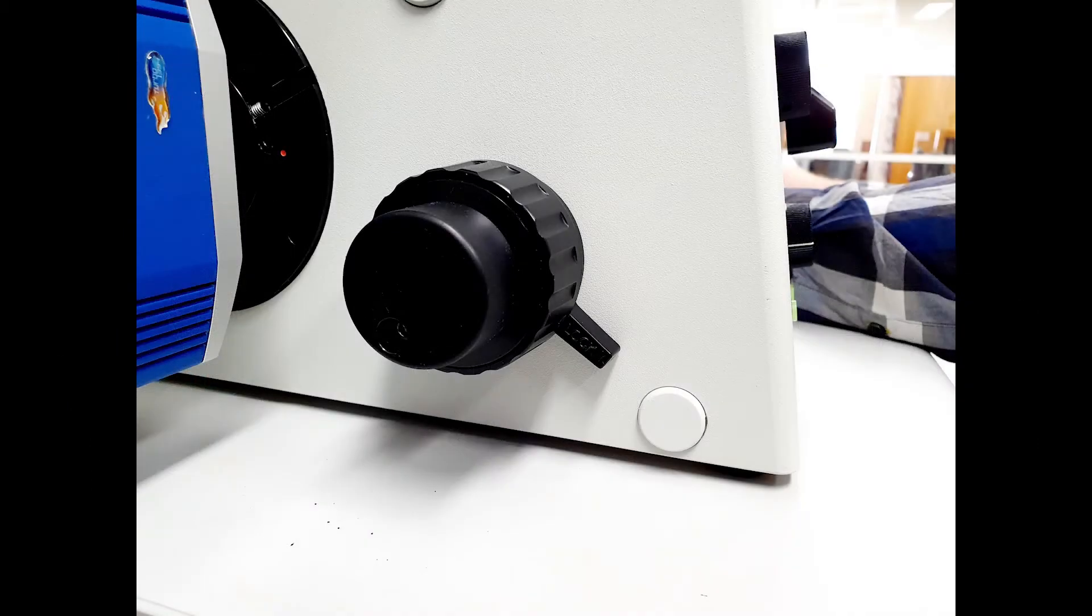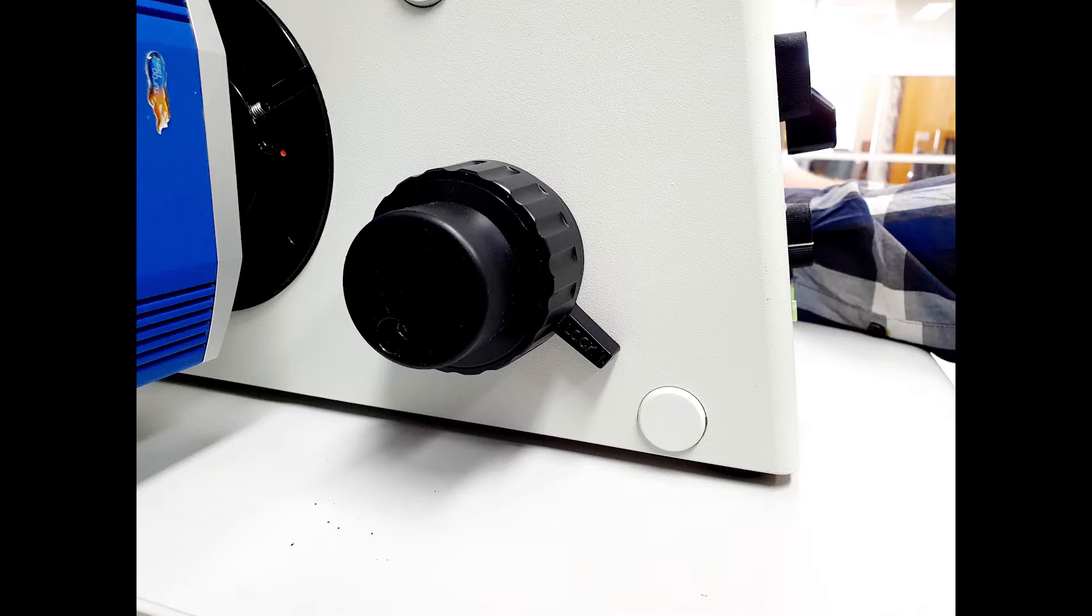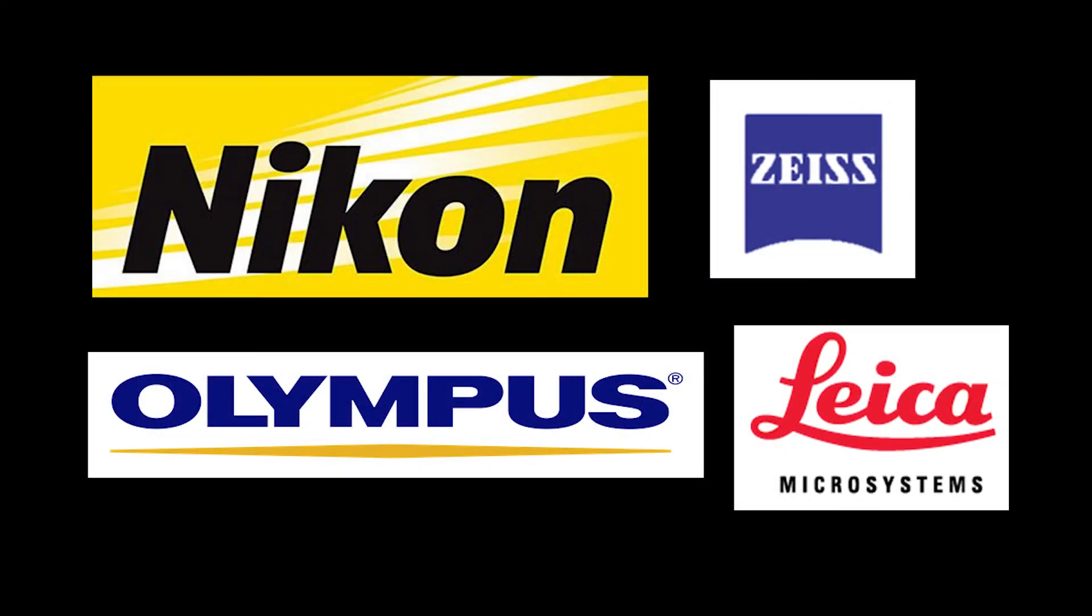All microscope stands have focus wheels that rotate to focus the magnifying objective through your sample. However, each manufacturer has chosen a different rotational direction, clockwise or anticlockwise, to move the objective towards your sample, so you'll need to learn and adapt to each system that you use.